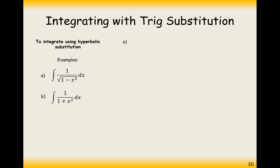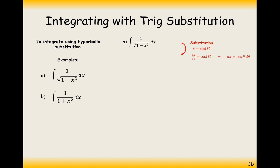Let's get started on the first one. How are we going to bring arcsin into it? Well, we're going to notice that we've got 1 minus something squared. Just to remind ourselves: sine squared plus cos squared equals 1. If I take away sine squared, I get 1 minus sine squared. So what I'm going to do with this substitution is replace x with sine theta — then I get 1 minus sine squared theta, which can simplify. We also need to change the dx, so we differentiate our substitution and get dx equals cos theta dθ.